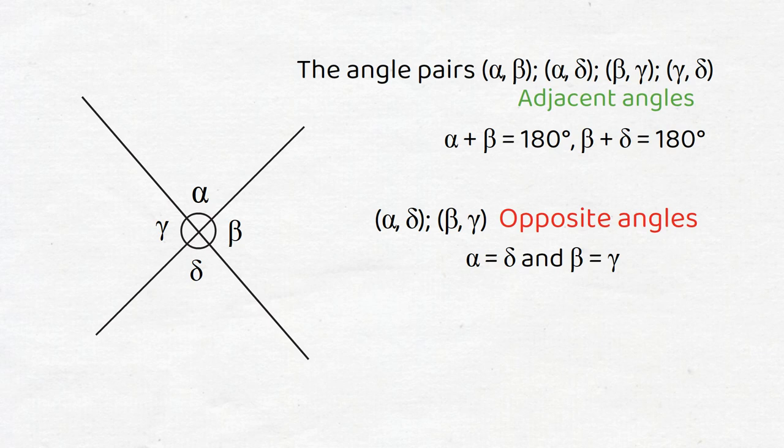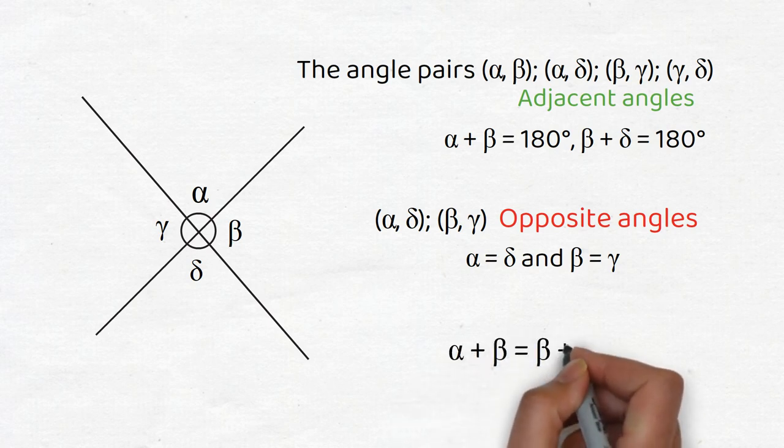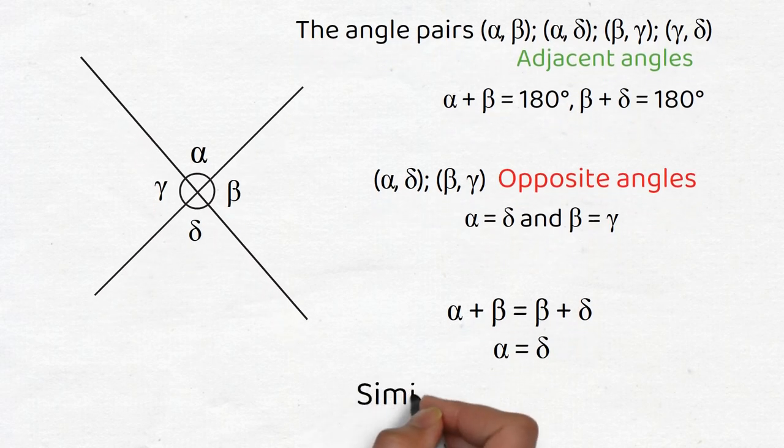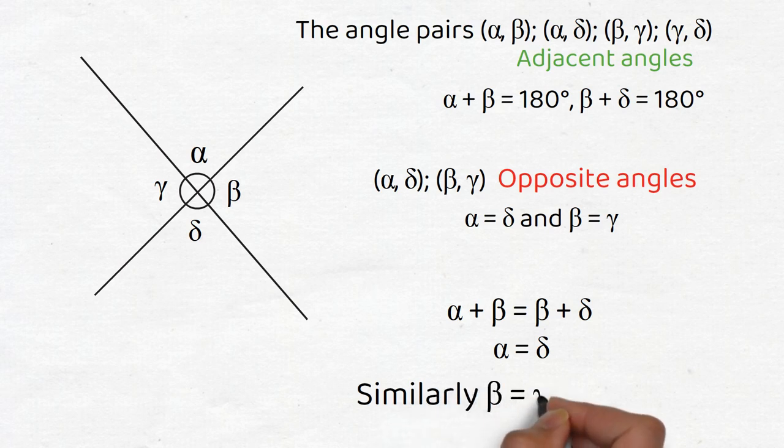To see why this is the case, we can observe that since α + β = 180, and β + δ = 180, it follows that α + β = β + δ. Now, if we subtract β from both sides of the equation, we get α = δ. The proof that β = γ is a similar such justification.